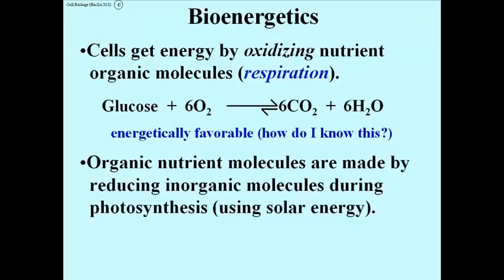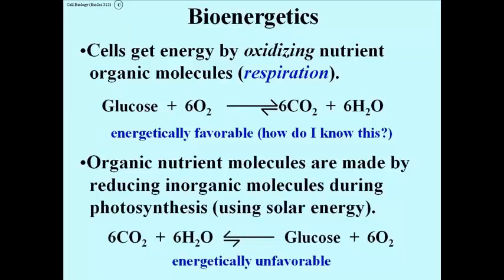Organic nutrient molecules like glucose are made by reducing inorganic molecules during photosynthesis, using solar energy. The chemical equation for photosynthesis is shown here. It's exactly the reverse of the equation for respiration, and therefore this reaction is energetically unfavorable, meaning it requires an input of energy. We know this by looking at the unequal equilibrium arrows, in which the long arrow now points towards the reactants.